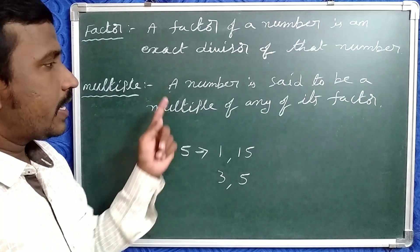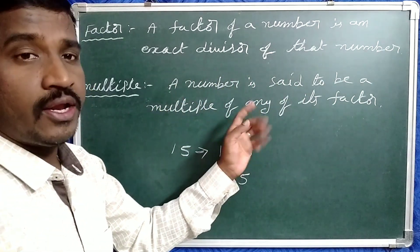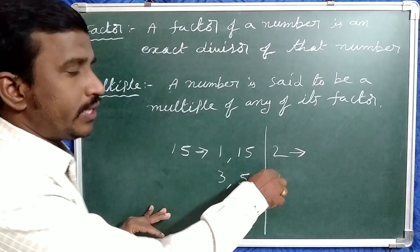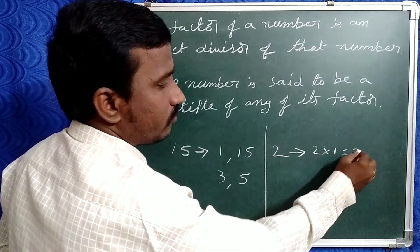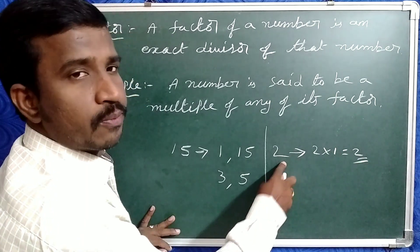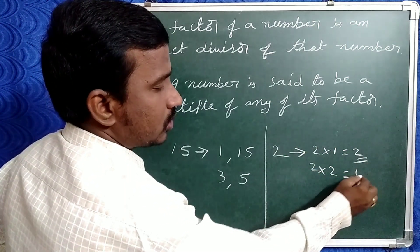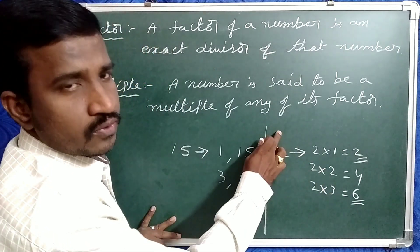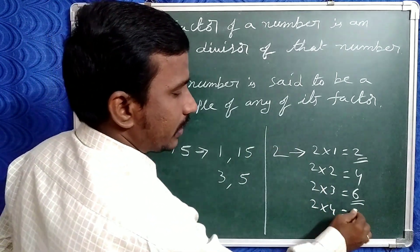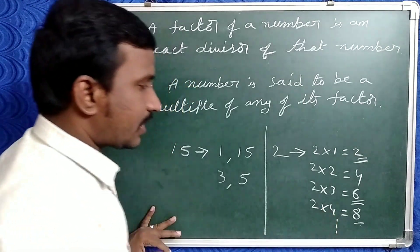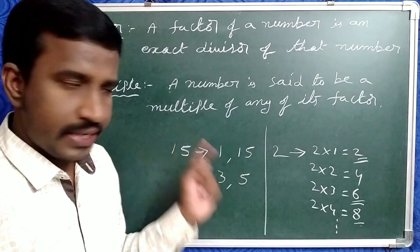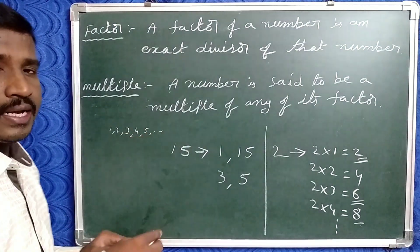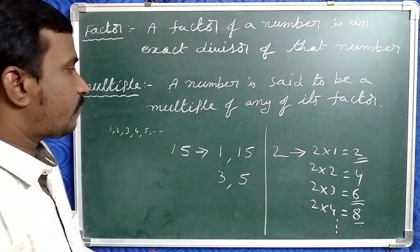Next, multiples. A number is said to be a multiple of any of its factors. Suppose take 2. The factors of 2: 2 into 1 means 2, so 2 is a multiple of 2. Again 2 into 2 is 4, so 4 is also a multiple of 2. 2 into 3 is 6, and 2 into 4 is 8. So the multiples of any number means a number multiplied by 1, 2, 3, 4, 5 and so on — the resulting numbers are called multiples of a given number.